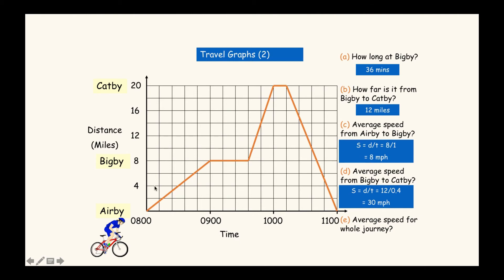For the average speed for the whole journey: they traveled 8 miles, then 12 miles, making 20 miles out, and 20 miles back, giving 40 miles total. They did it in 3 hours total, so 40 divided by 3 equals 13.3 miles per hour - you can also write this as 13 and a third miles per hour.